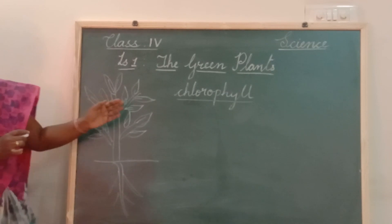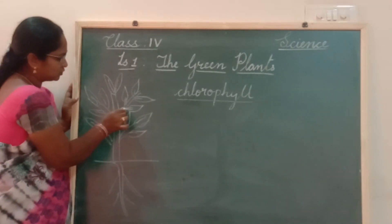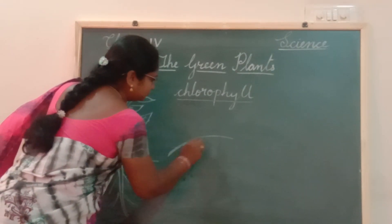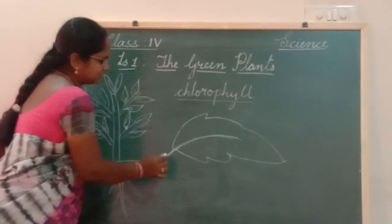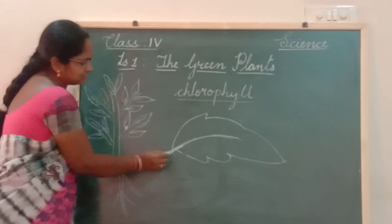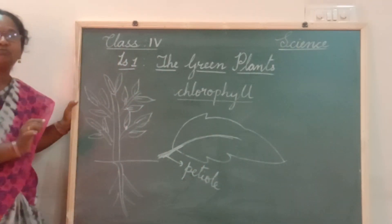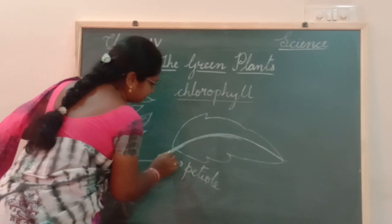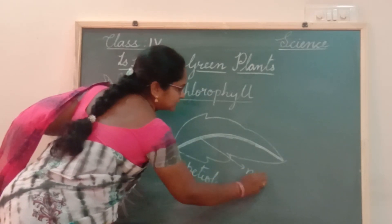Today let us study about the structure of the leaf. The leaf is supported with a small stalk to the plant — this is known as the petiole. It is the stalk of the leaf. The petiole is extended into the leaf, into a stalk-like structure. This long structure is known as the midrib.